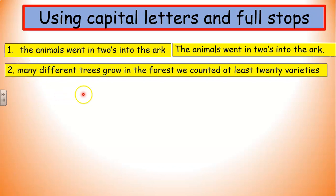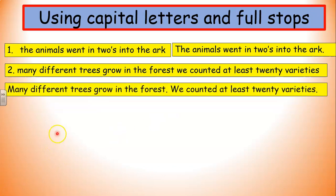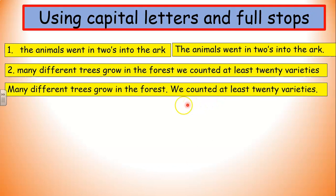Many different trees grow in the forest. We counted at least 20 varieties. Now, in this example there are actually two sentences. So we need to figure out where we put a full stop at the end of a sentence and where we start a new sentence with a capital letter. Capital letter to start our sentence: 'Many different trees grow in the forest.' And that is where our full stop comes. Then we start a new sentence: 'We counted at least 20 varieties.' And then we put our full stop at the end. We could have said 'Many different trees grow in the forest and we counted at least 20 varieties,' but that would have been using conjunctions, and I didn't ask you to do that.